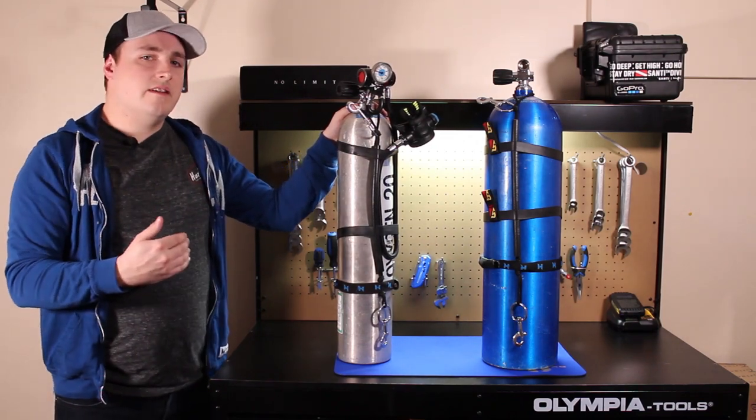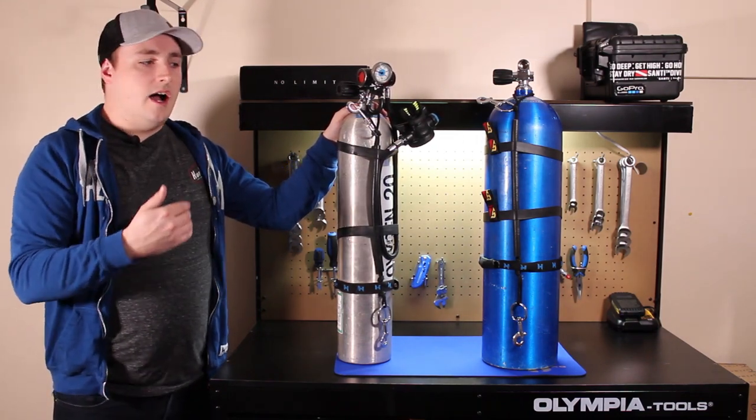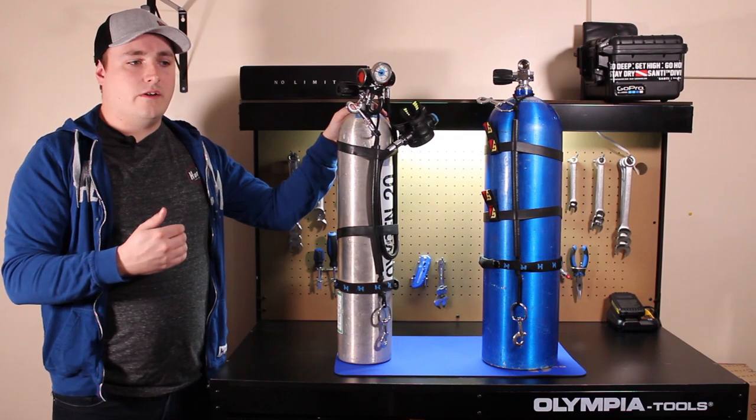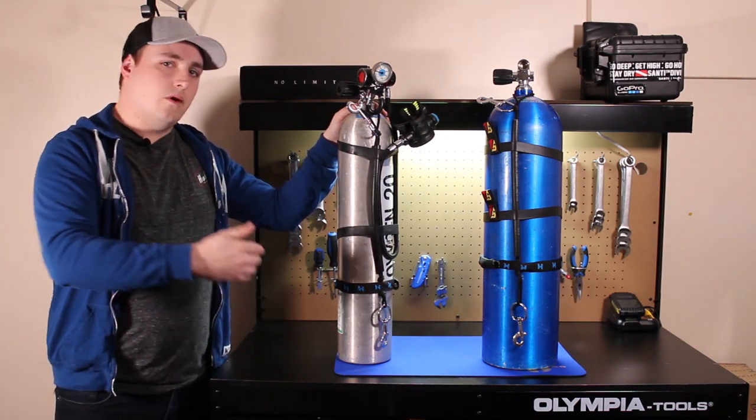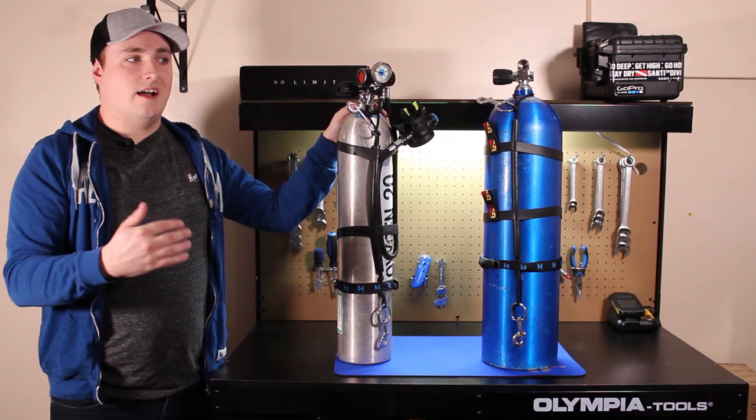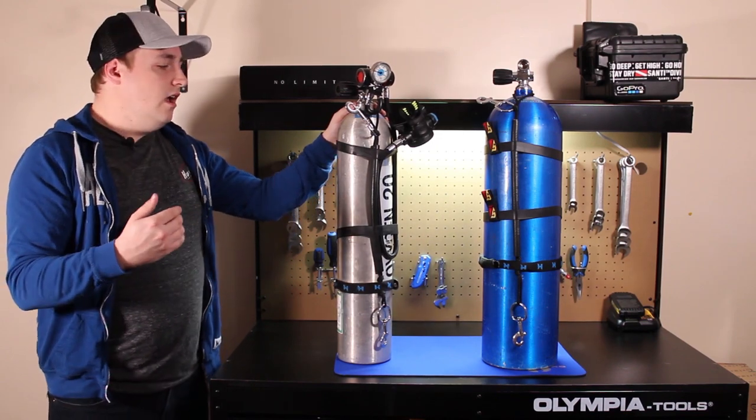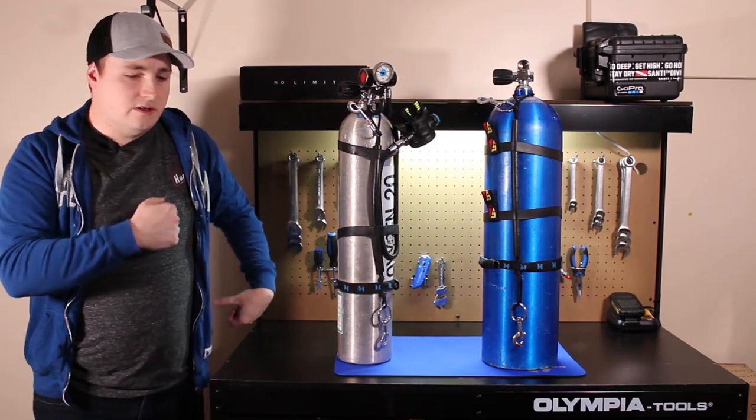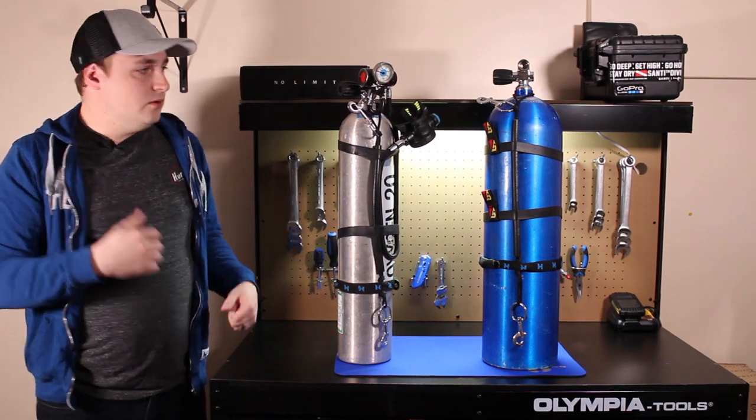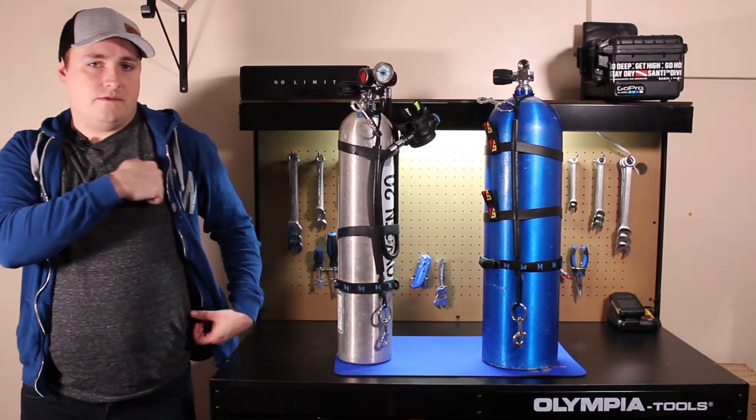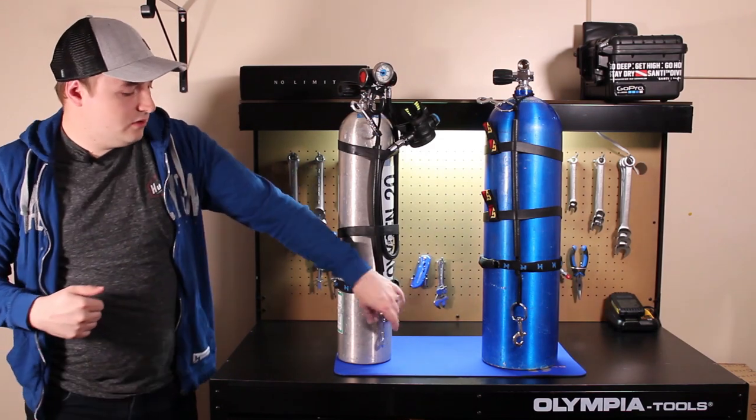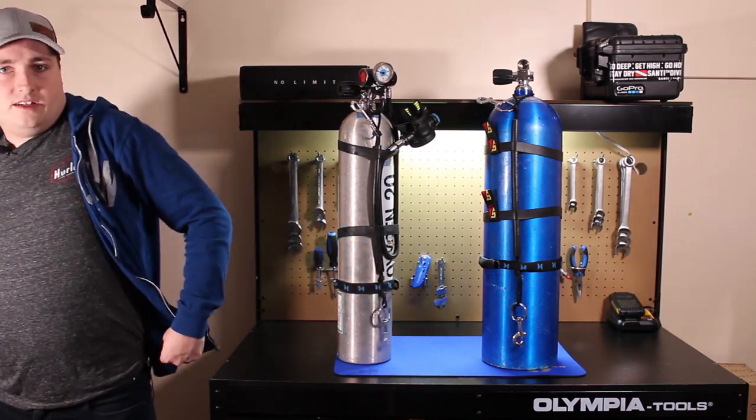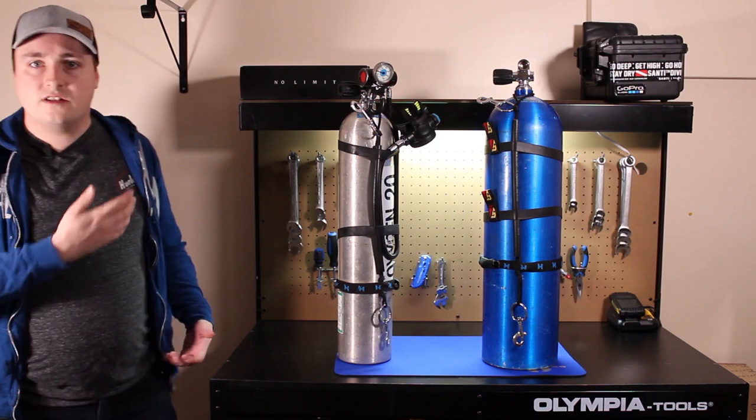So sometimes you'll hear the name stage or pony bottle. Really the difference is whether or not they are a recreational diver or a professional or technical recreational diver. A pony bottle is basically an insurance policy. It's just an additional cylinder you would hang off your chest. Usually these guys will clip to your upper left shoulder D-ring and then clip down to your lower left hip D-ring on a DIR style harness.